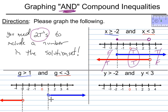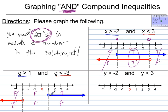I'll drop two vertical lines down for the critical points and do some labeling. For the blue line, numbers to the right of 1 are true, between negative 3 and 1 are false, and to the left of negative 3 are false. For the red line, to the left of negative 3 is true, between negative 3 and 1 is false, and to the right of 1 is false. We're looking for two trues — in the far left we don't have any, in the middle we don't have any, and on the right we don't have any. The answer is the null set. It's impossible to find numbers that are both bigger than 1 and less than negative 3 at the same time.